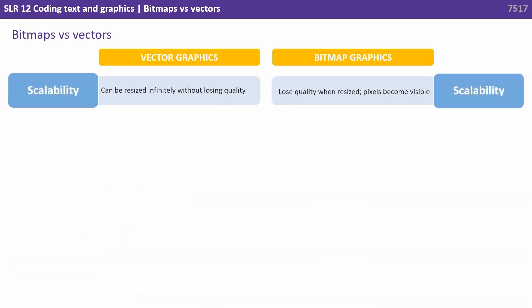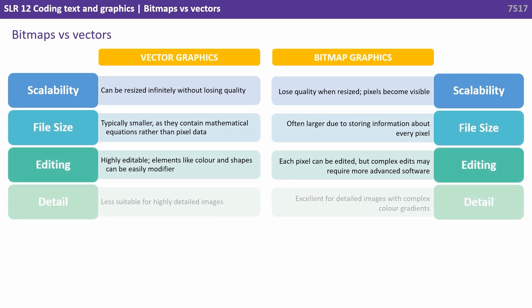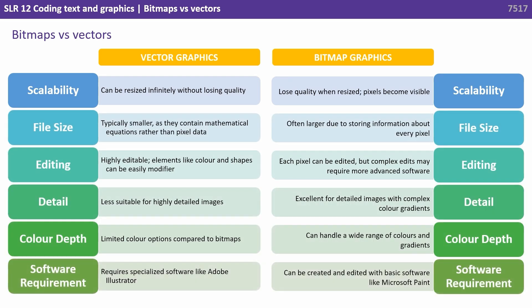Here we have quite a nice summary table. Looking first at scalability: vector graphics can be resized infinitely without losing quality because they are redrawn each time based on the maths. Whereas with bitmap, we lose quality when resized because the pixels become visible.